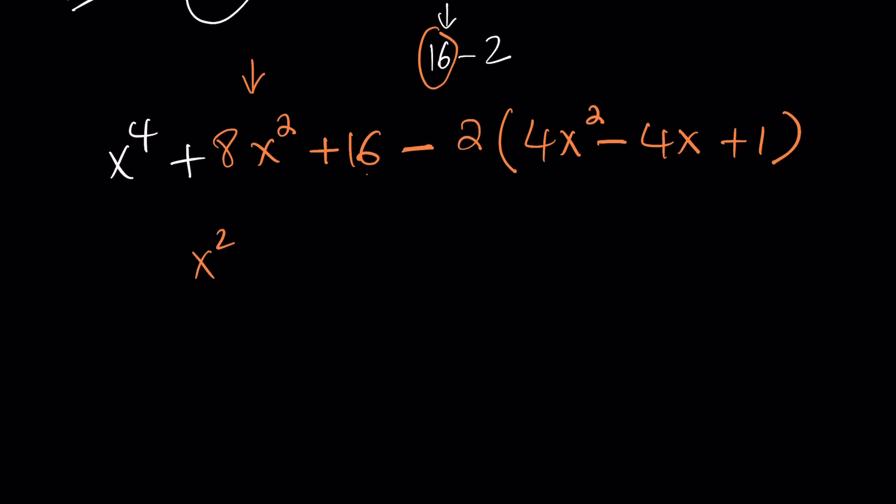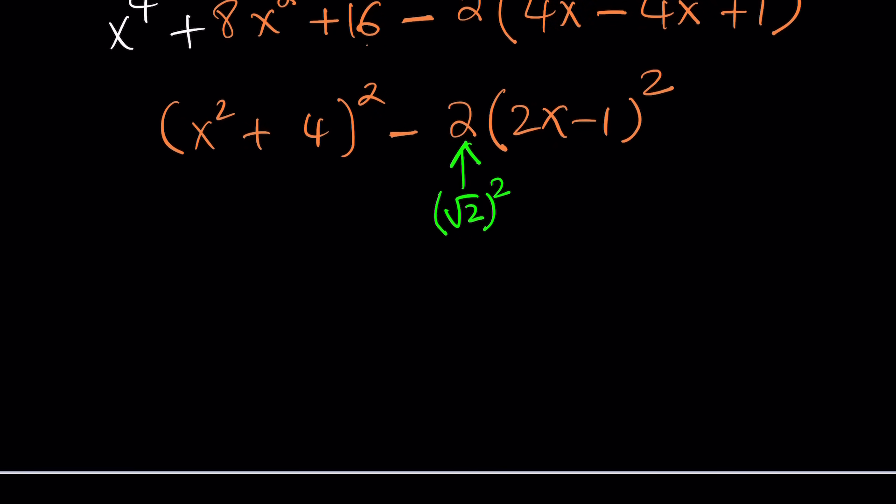So, this one is x squared plus 4 quantity squared. And this one is minus 2 times 2x minus 1 quantity squared. Now, why did I call this a semi-perfect square? Because of the presence of 2. Because 2 is not a perfect square. But we can get away with that. Because now, this becomes a difference of two squares. If you consider that 2 is square root of 2 squared, now you'll be able to factor this using difference of two squares.